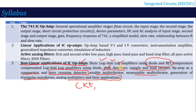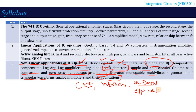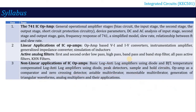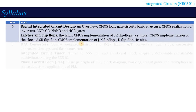For each topic, such as peak detector, you first know the circuit, then understand how it works, and if there is a mathematical derivation, you calculate the output. These are the three main units: Unit 1 is the basics of op-amp, Unit 2 is linear applications, and Unit 3 is non-linear applications. Unit 4 is digital integrated circuit design.